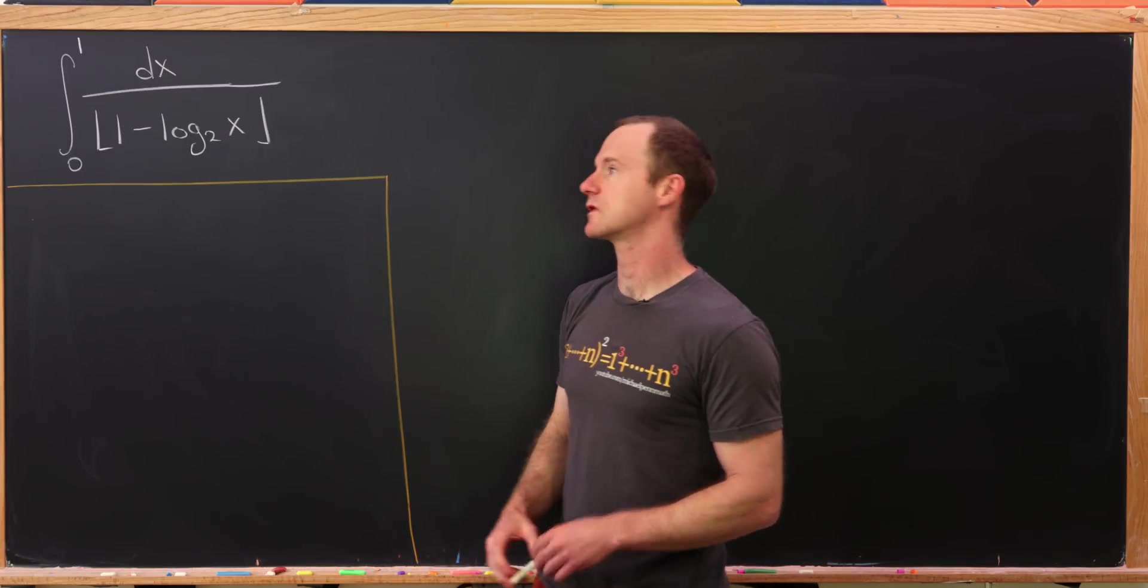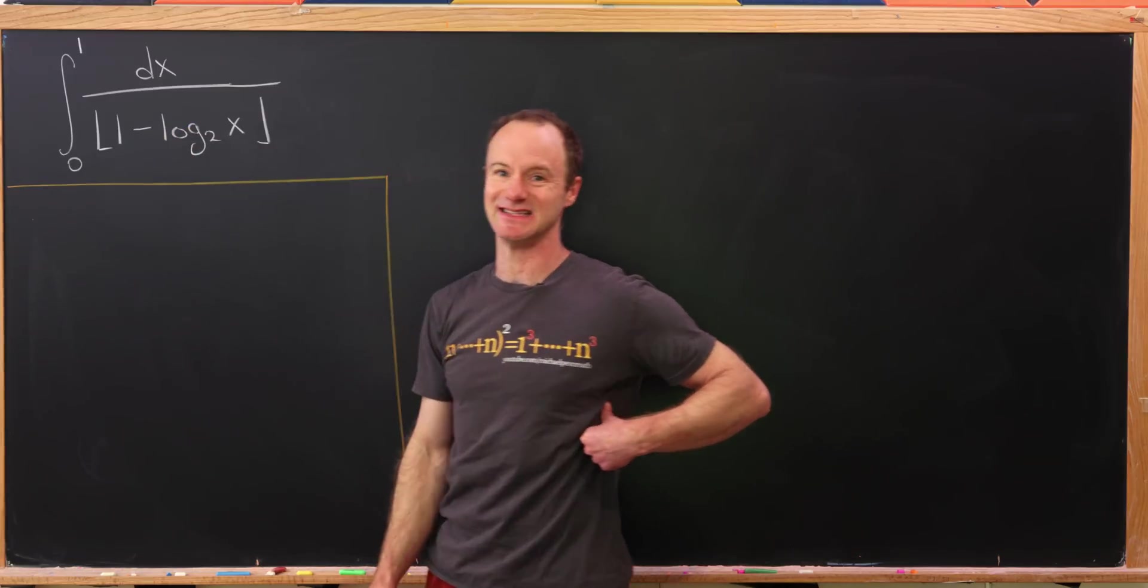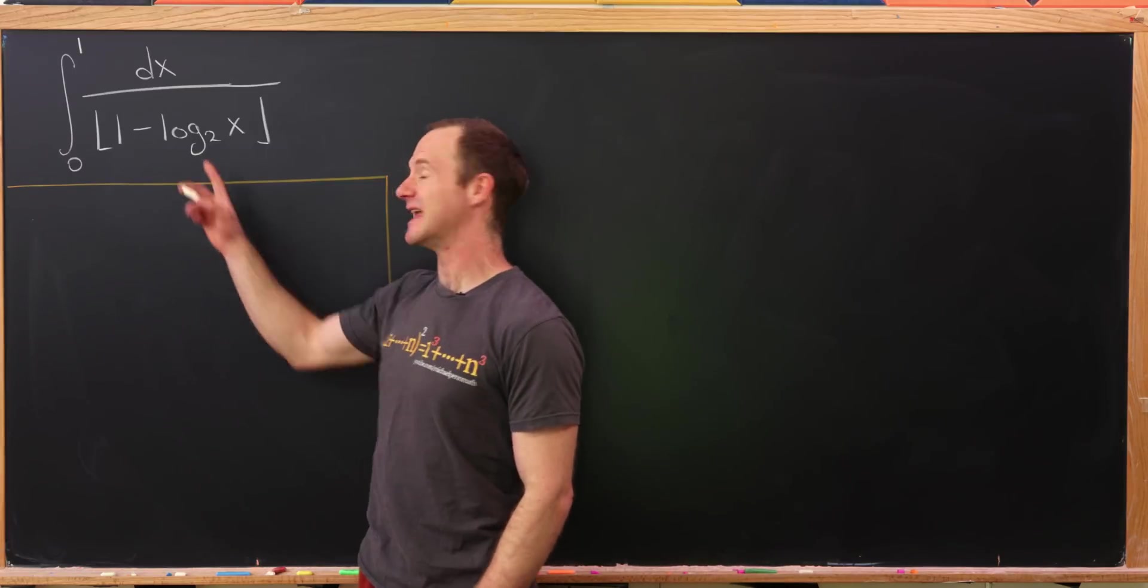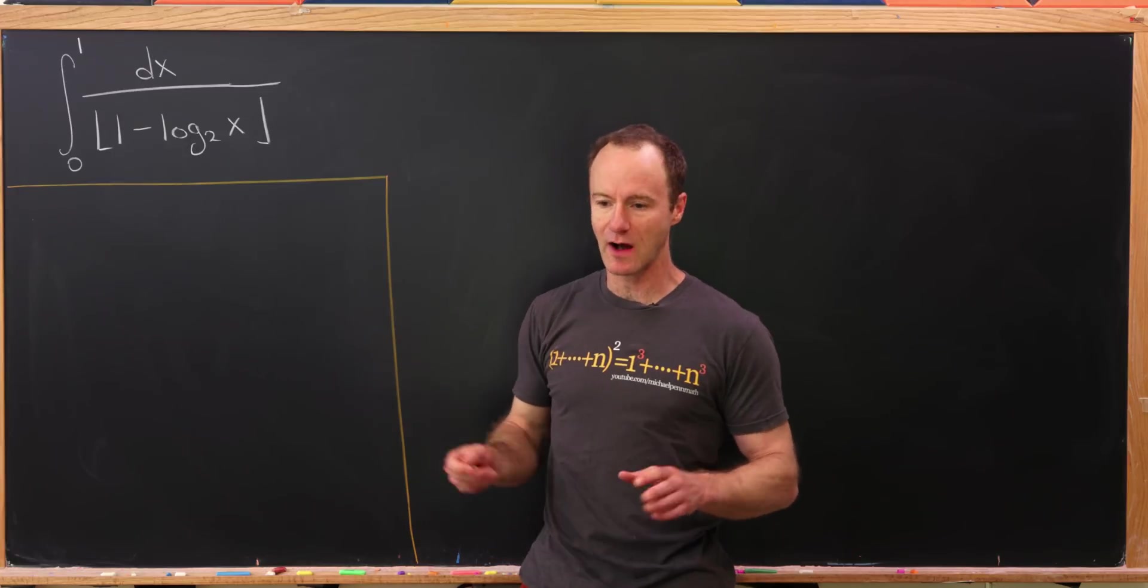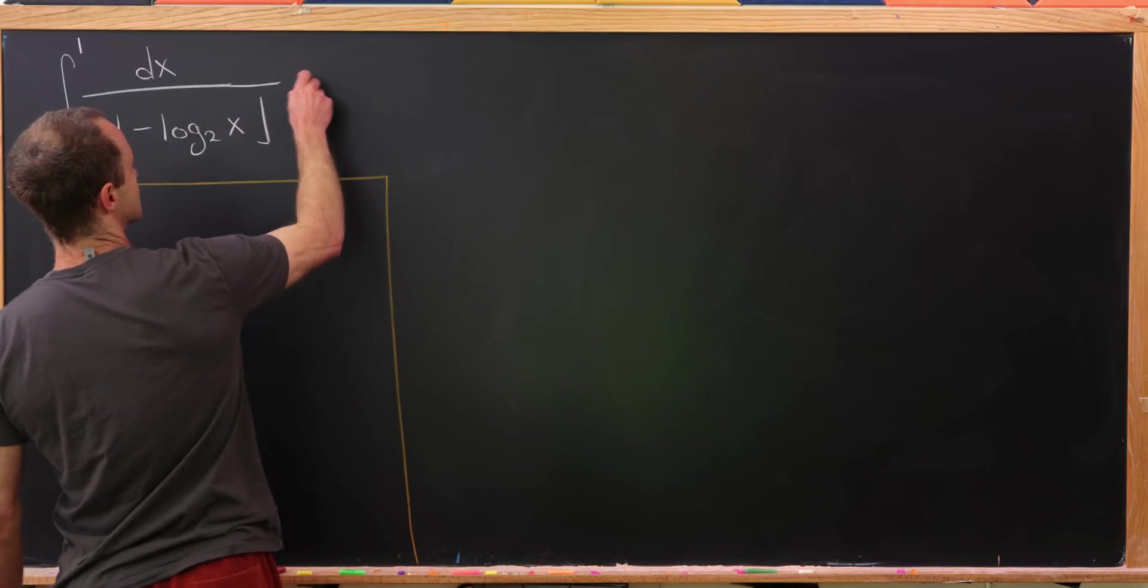Now before we start our real calculation, let's notice that this has a discontinuity at 0. The limit as x goes to 0 from above of any logarithm is negative infinity. So that means to properly do this I need to write this in terms of a limit, and that's exactly what I'll do.